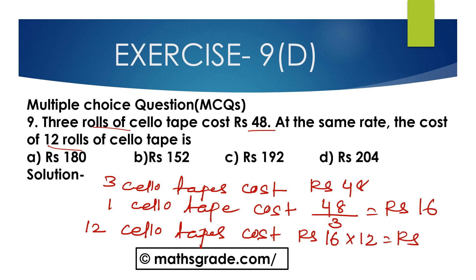Which is equal to 16 multiplied by 12, which is 192. 192 rupees. Option C, 192 rupees is the correct option.